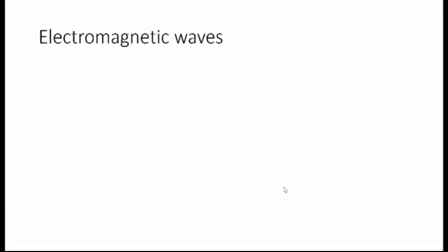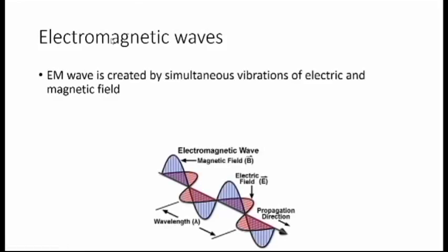Now before going deep into the topic, let us first review our basic understanding of electromagnetic waves. Electromagnetic waves are energy transported through free space or a medium in the form of electric and magnetic fields. An electromagnetic wave consists of two fluctuating fields: one, an electric field which varies in the direction perpendicular to the direction of propagation; two, a magnetic field oriented at right angles to the electric field.